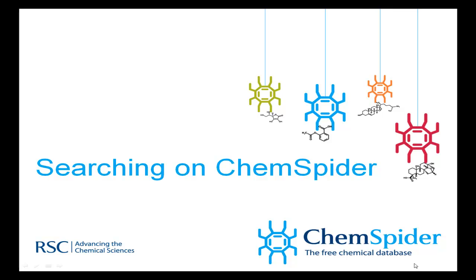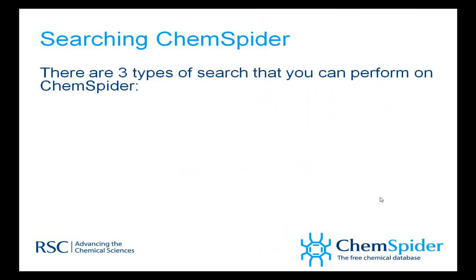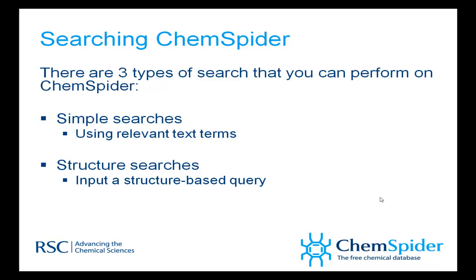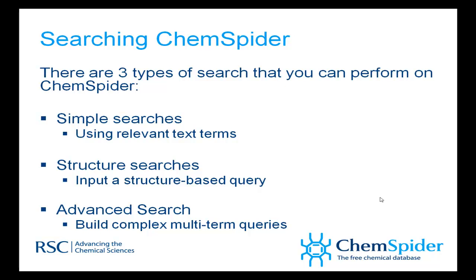Welcome to this ChemSpider video tutorial on searching. There are three ways to search for a compound in ChemSpider: doing a simple search using a text term — so a synonym, a name, a systematic name, or even a database registry number. The second form of search is a structure search. And thirdly, there is an advanced search which allows you to generate complex searches with lots of different queries.